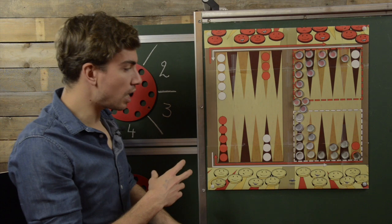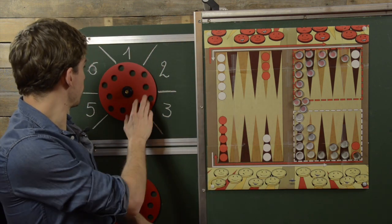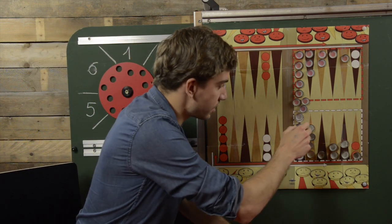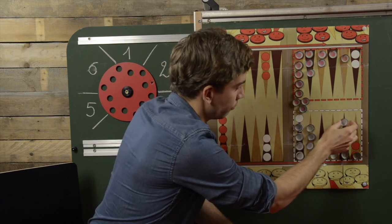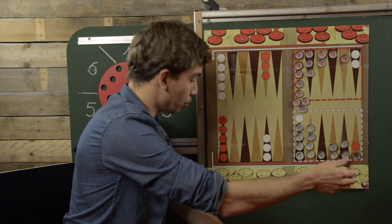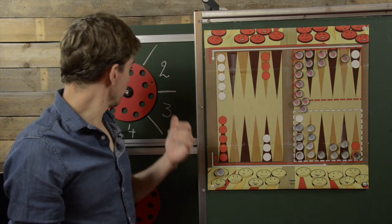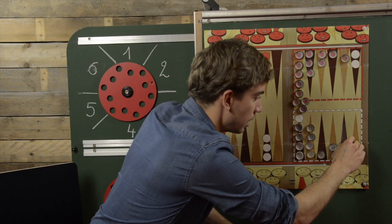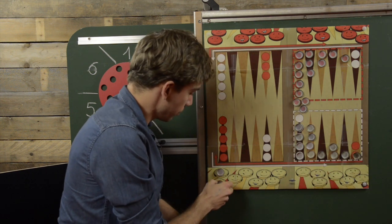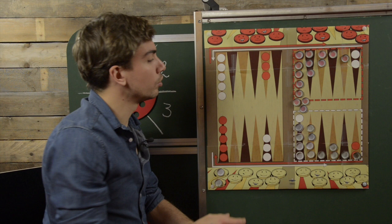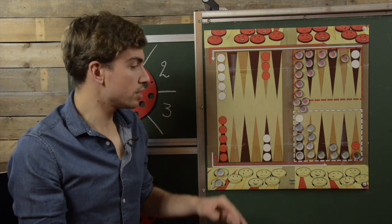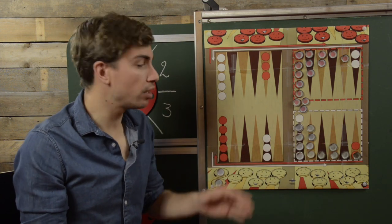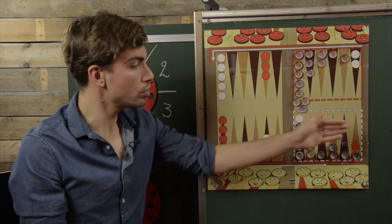Once all checkers are inside the home board, you can start bearing off. Imagine I'm the white player — I spin the disc and get a six and a two. I take one bottle cap, move it six points and it's out, so I place it in the tray. I still have a two, so I take another one, move it two points and it's out — into the tray as well. When bearing off, always try to do it with the exact number.